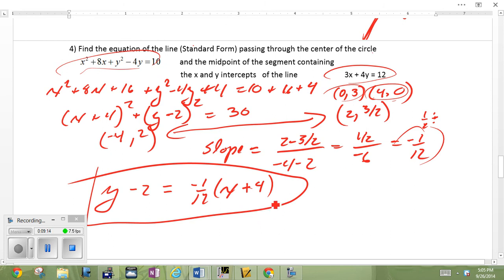We want to put it in standard form. No big deal. Multiply by, excuse me, multiply by 12. 12Y minus 24 equals negative 1 X minus 4. Take it home from there. X plus 12Y equals 20, equation of that line.